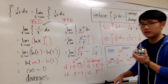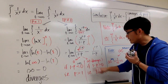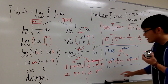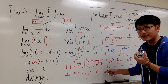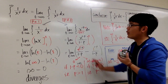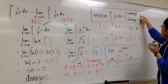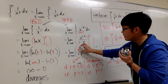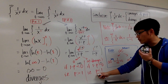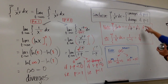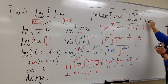If p is greater than 1, the troublesome term goes to 0, and the integral converges. If the exponent 1 minus p is positive — meaning p is less than 1 — then infinity to a positive power is infinity, so the integral diverges. Combined with the p equals 1 case, this integral diverges if p is less than or equal to 1.